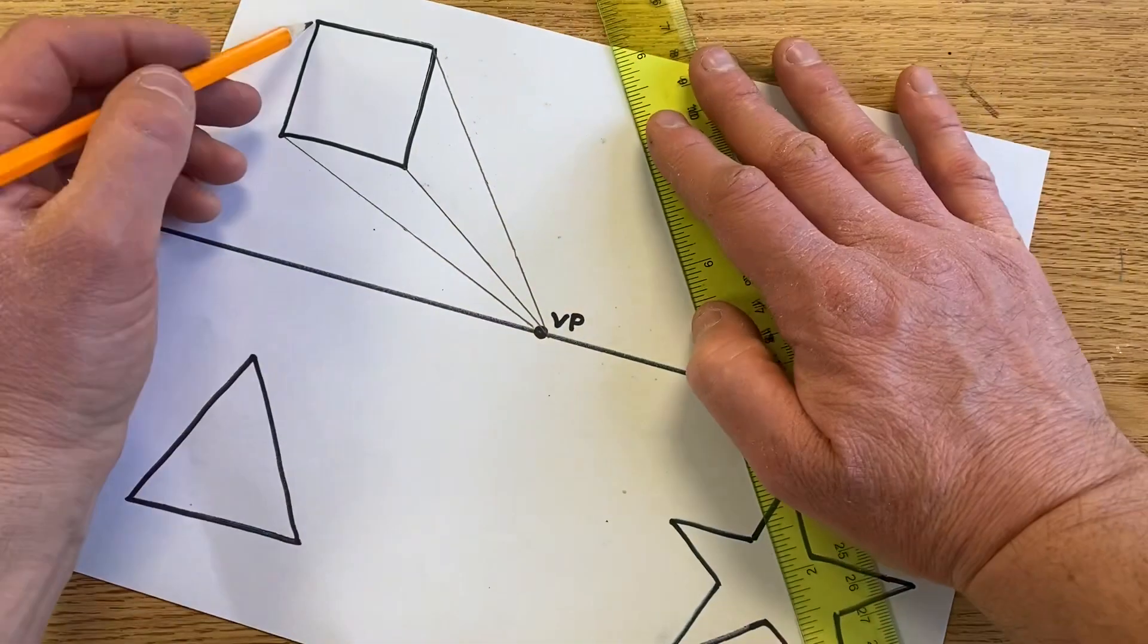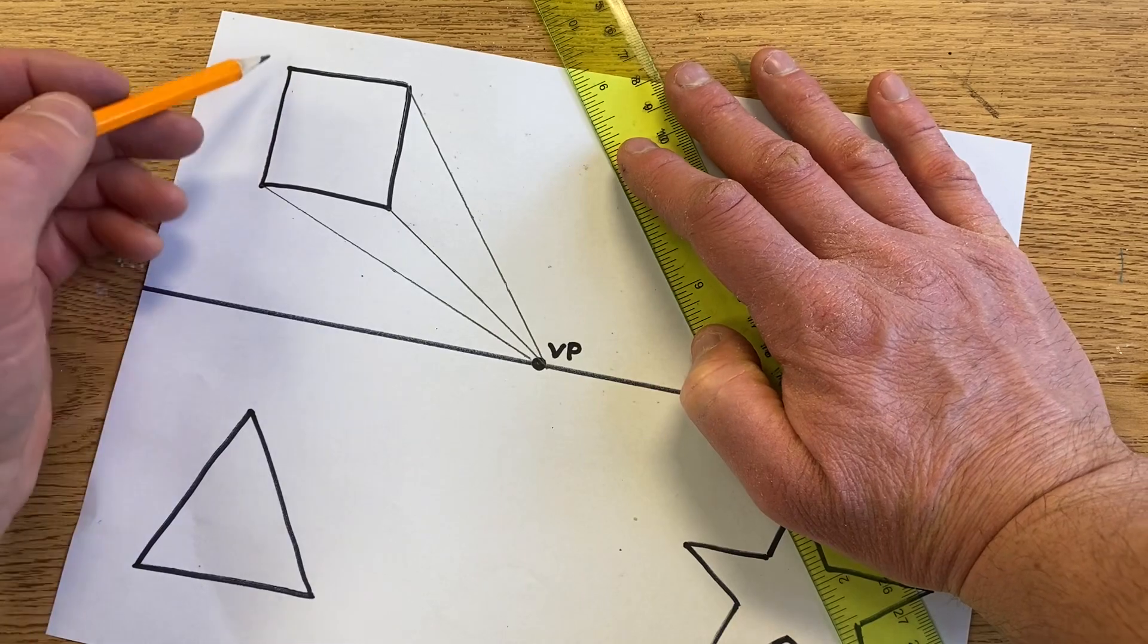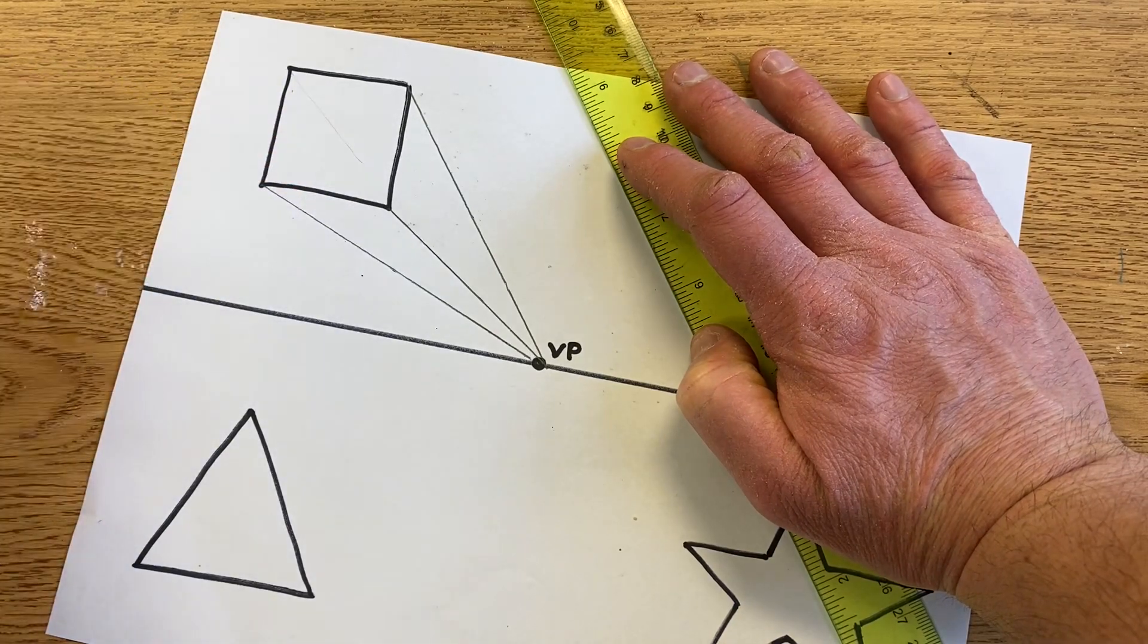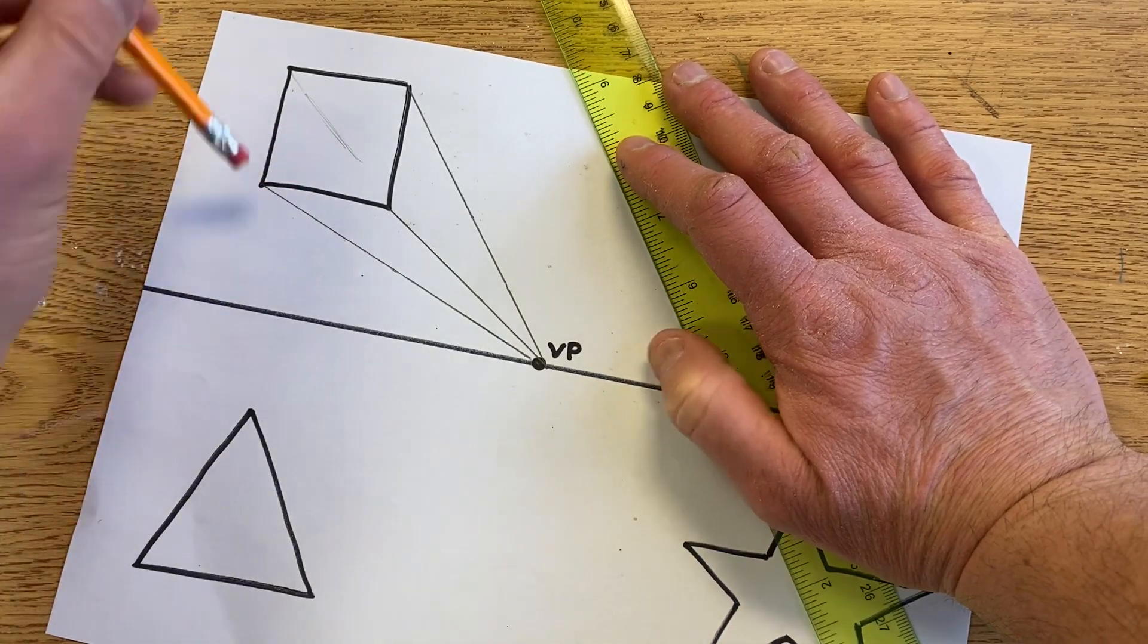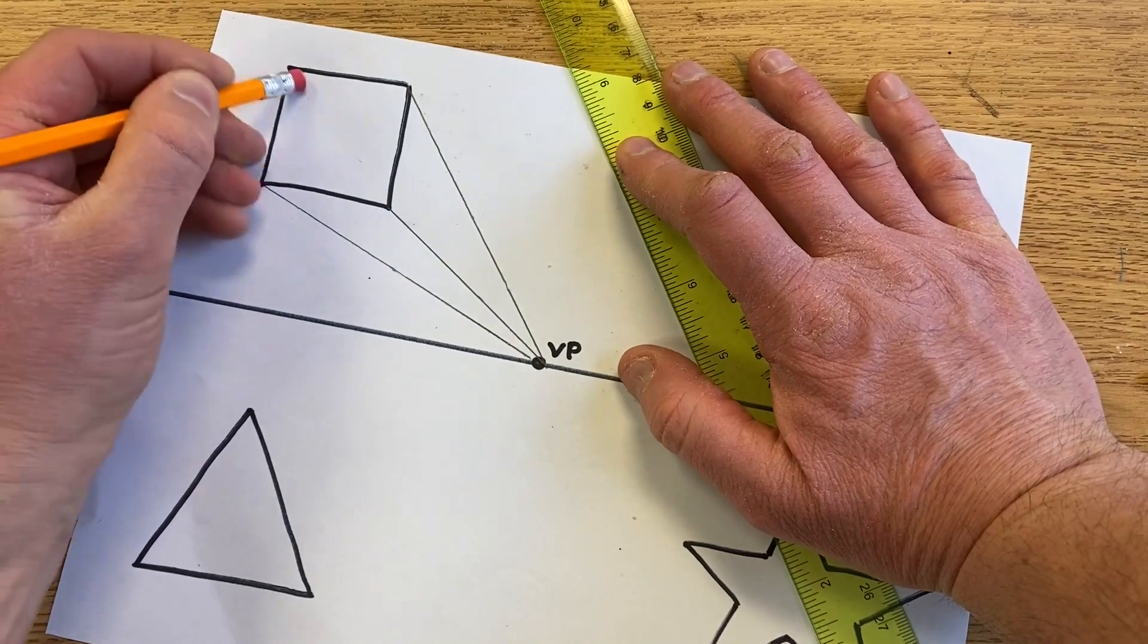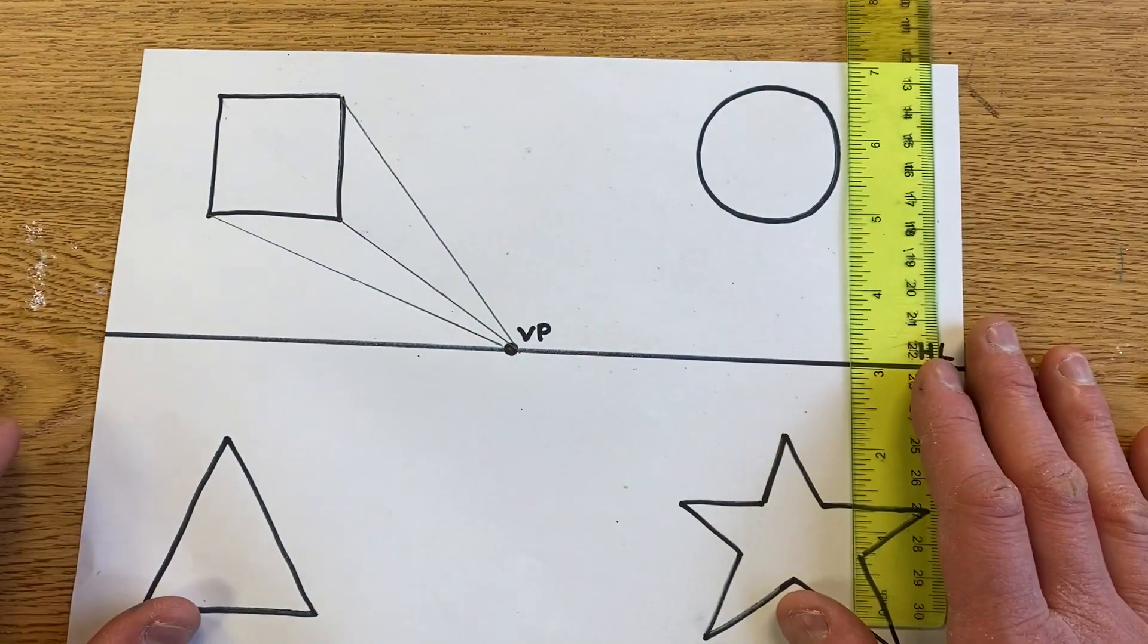This last one back here I'm not going to do because I don't want my line going through my shape. That's all we have to do for the first one—the square is done.